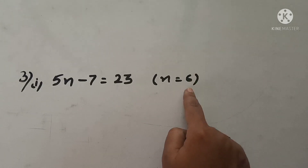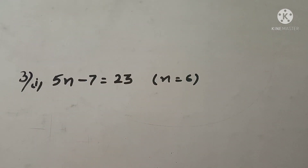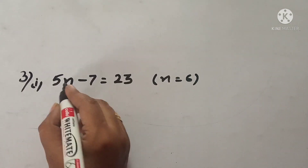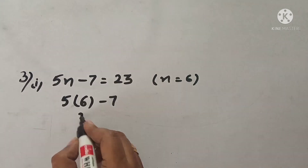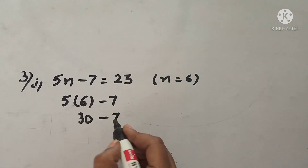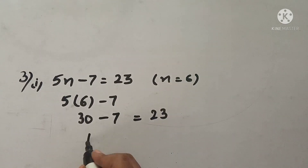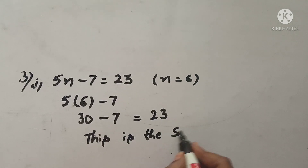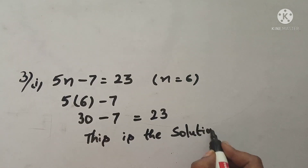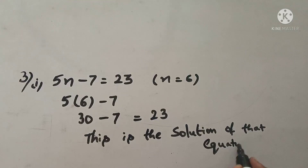We substitute 6 in the place of n. So 5 into n value 6 minus 7 gives us 5 into 6 is 30 minus 7 which is 23. So 6 is the solution of that equation.